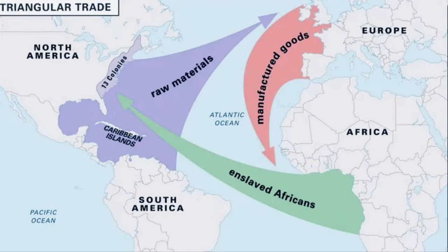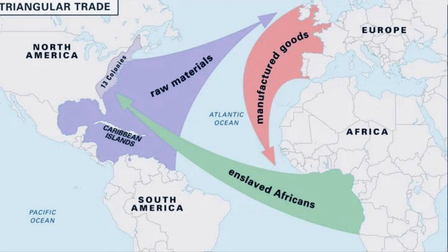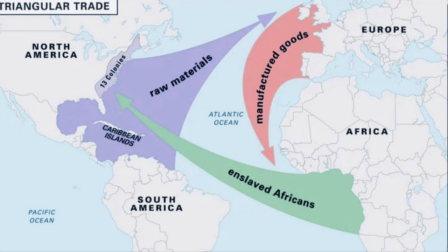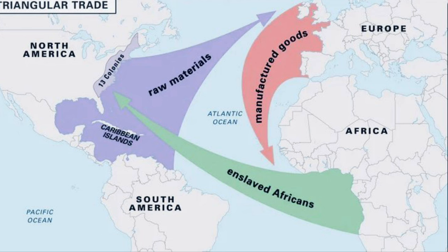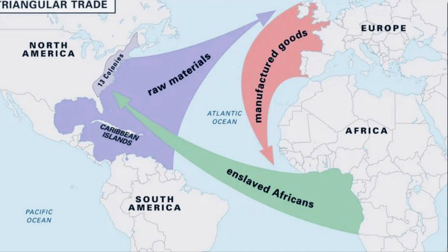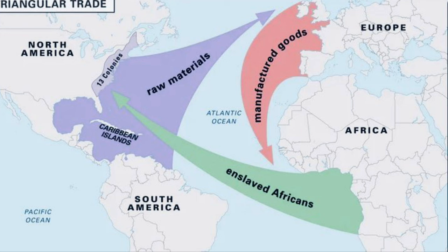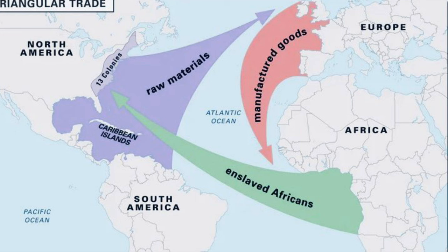The triangular trade developed around the 16th century, or in other words around the 1500s. Initially, Europe, Africa, and the colonies traded goods and treasures, and it was not until around the 1600s when things changed drastically.